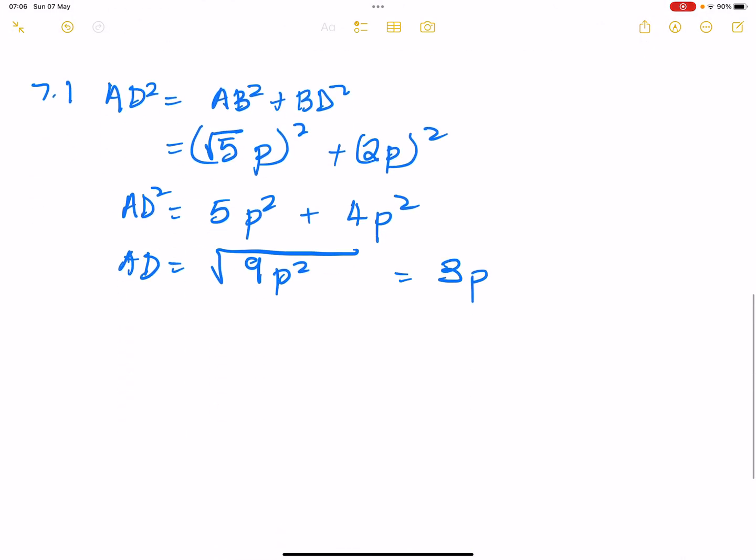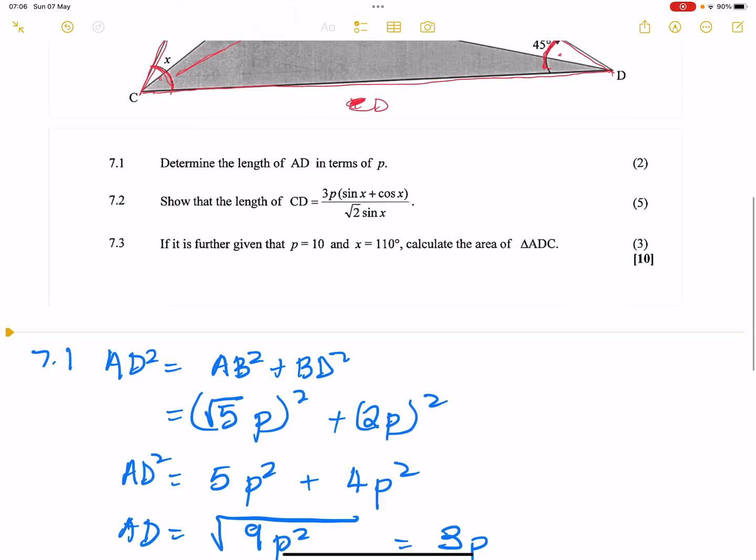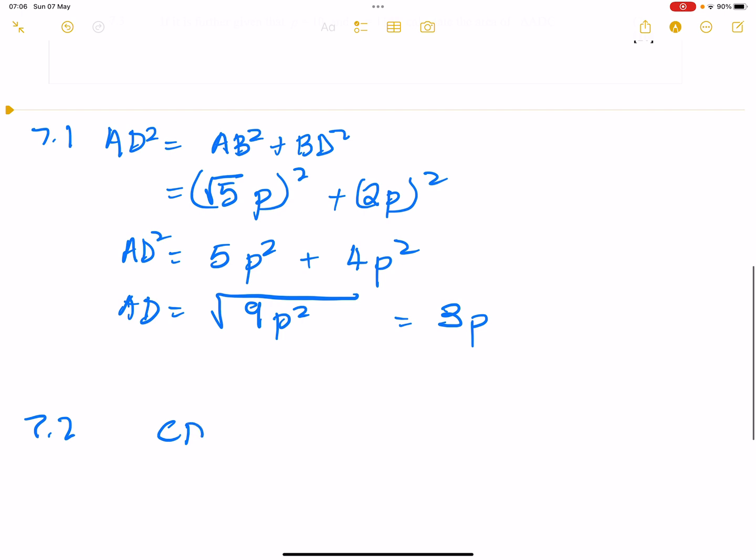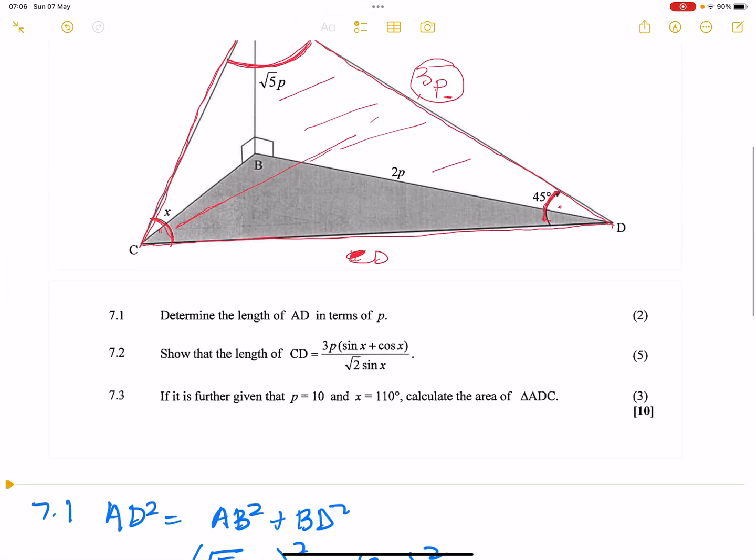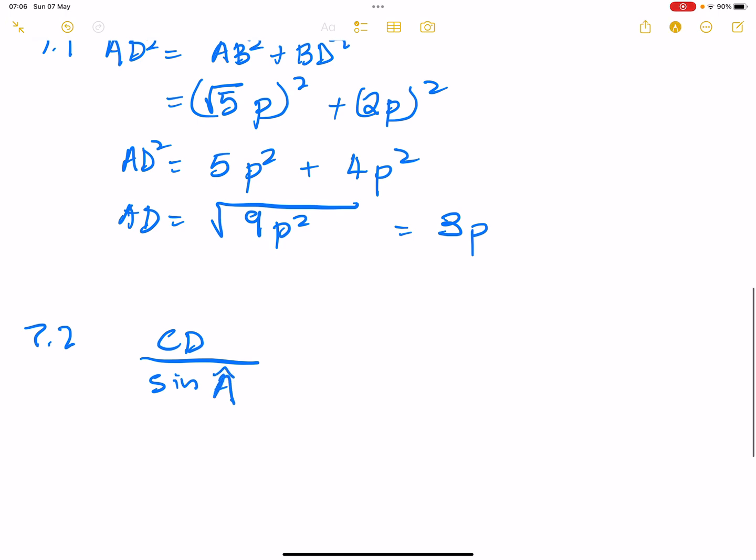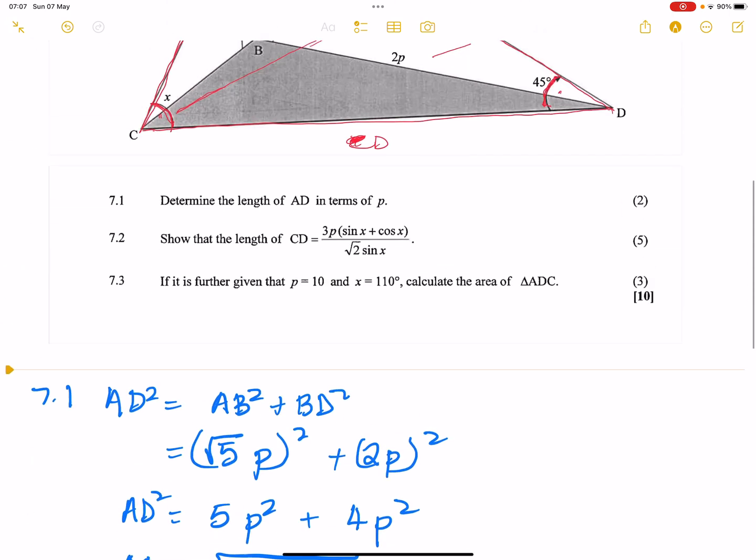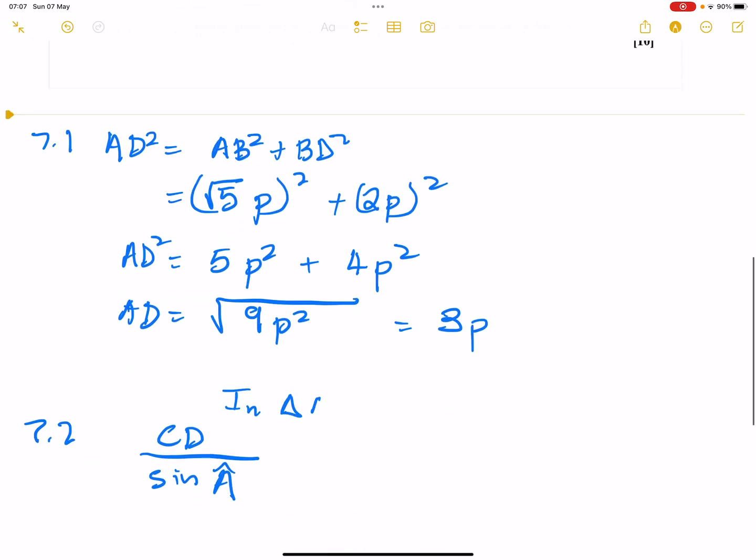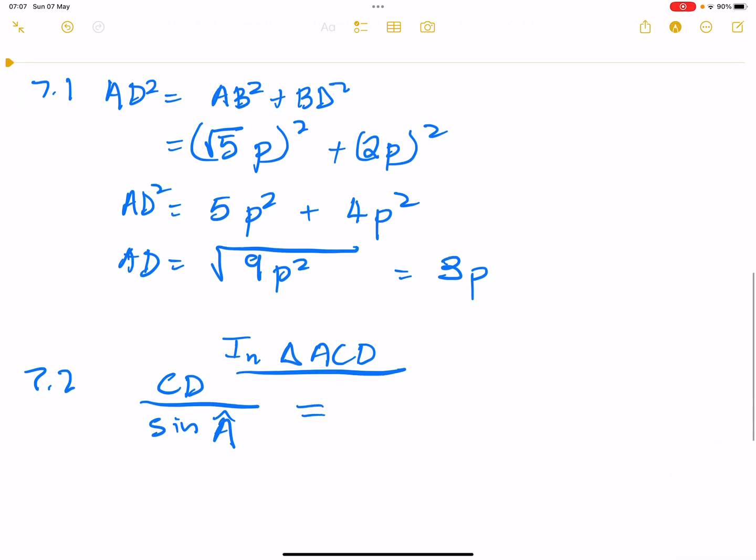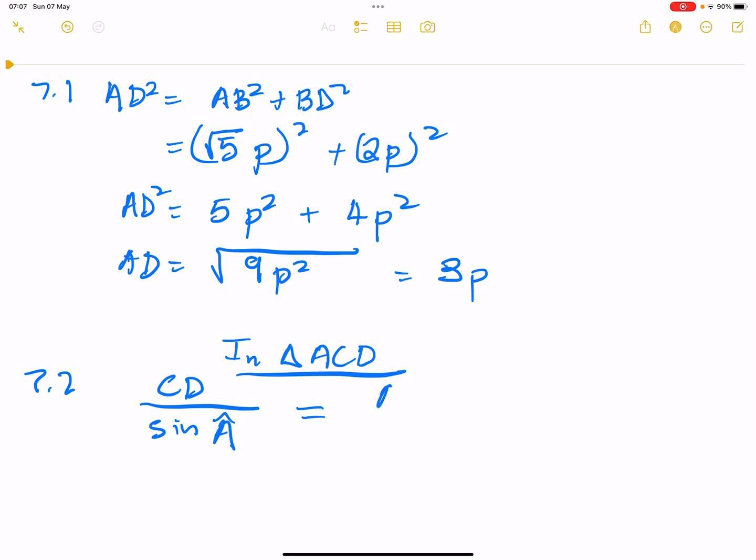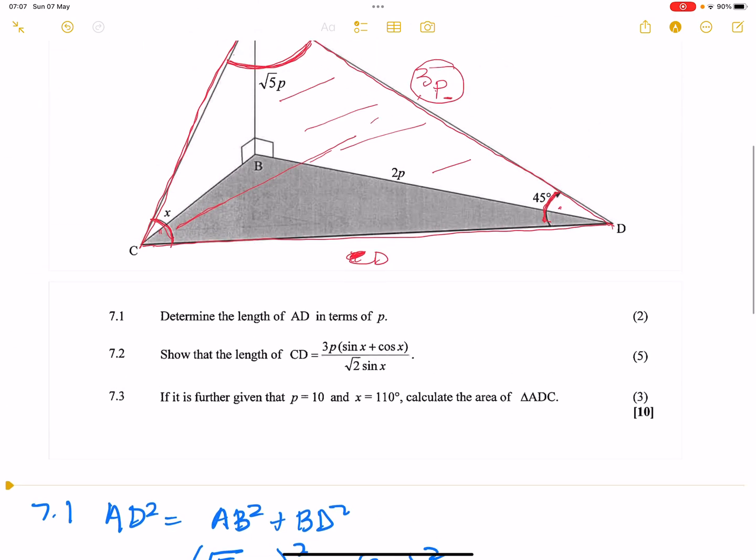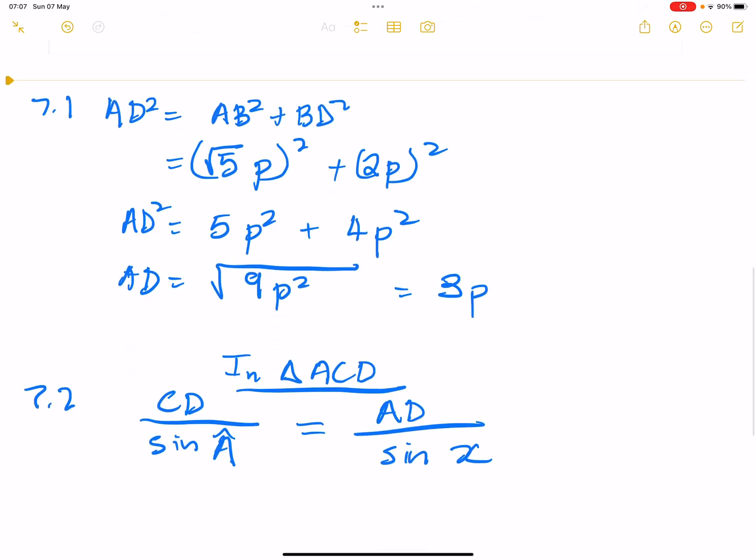And we're looking for CD, and I'm going to use a side that I already have 3P, and the angle opposite that is angle X. So let's write that down. So for 7.2, I am going to, because I'm looking for CD, I'm going to say this is CD over the sine of the angle that is opposite that. We said that is angle A. In fact, I should have said in triangle ACD. In triangle ACD. You should specify which triangle you are working in, so that it's easier for the person marking.